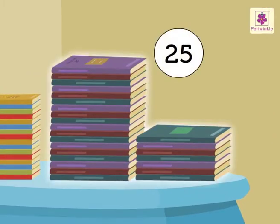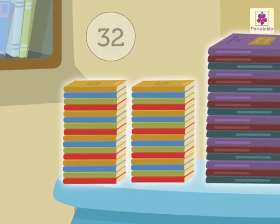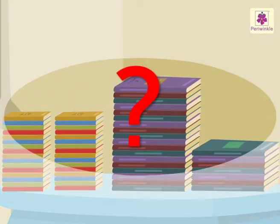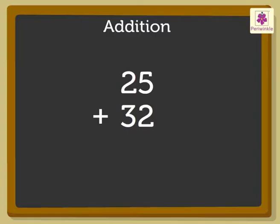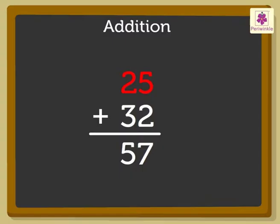There are 25 long books and 32 small books on the table. How many books are there in all? Let us add 25 and 32 to find the total number of books. 5 plus 2 is equal to 7. 2 plus 3 is equal to 5. Thus, the sum of 25 and 32 is 57.